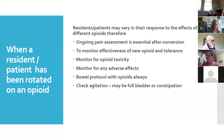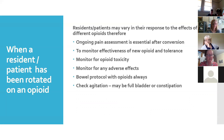When a resident or patient has been rotated on an opioid, it's very important to keep checking them, as people vary in their response to different opioids. Ongoing pain assessment is essential, especially after converting from one medication to another or from oral to subcut. We want to monitor the effectiveness of the new opioid and make sure the resident can tolerate it. We also monitor for opioid toxicity — checking whether they're still able to respond, do they have pinpoint pupils, are they confused, is their breathing slowing down — and monitor for adverse effects such as nausea and vomiting.